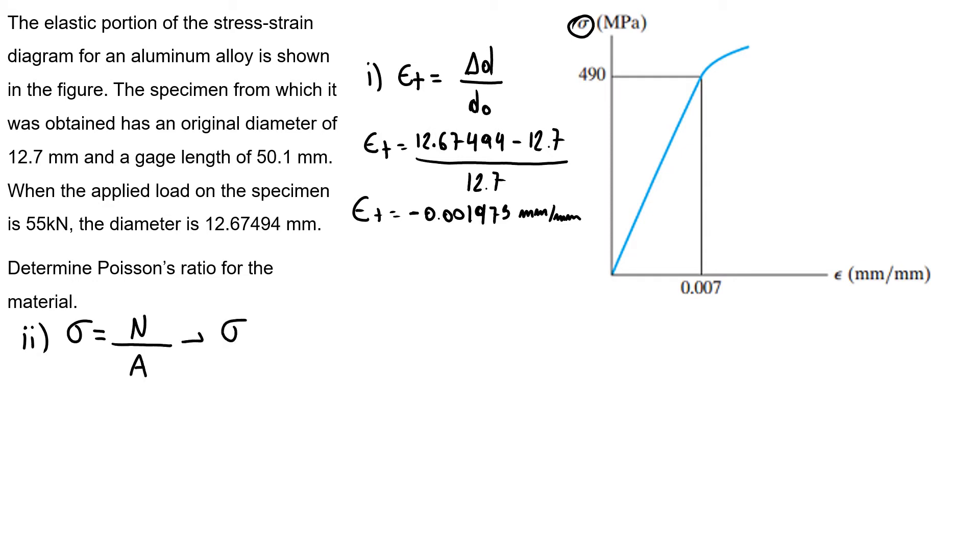We know that our normal stress is the load applied over the area. So my stress equals 55,000 newtons over my area, that's pi over 4 times 12.7 times 10 to the minus 3 squared. So I discovered my stress is 434.18 megapascals.